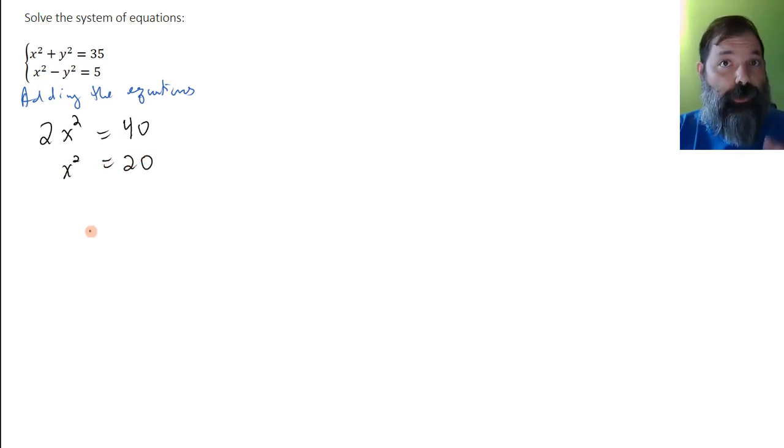Solving for x, x is the positive or negative square root of 20. I'm just going to leave it like that. So this gives two solutions: x equals negative square root 20 or x equals positive square root 20.